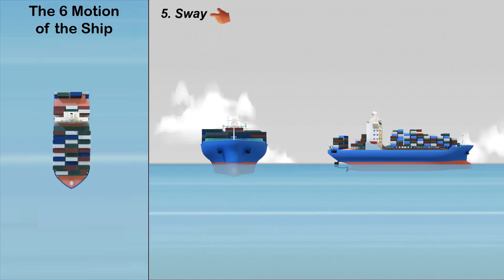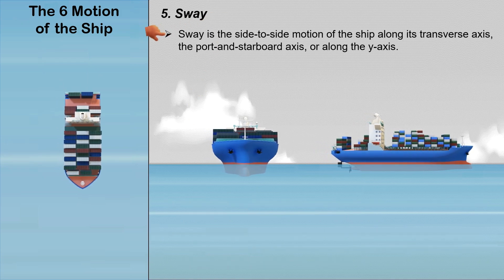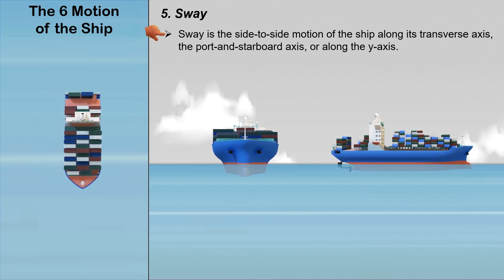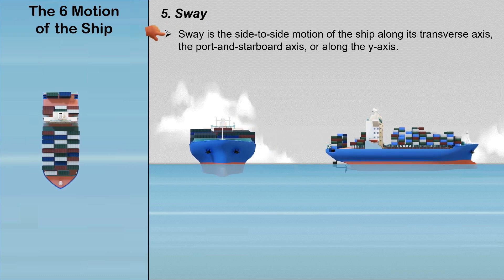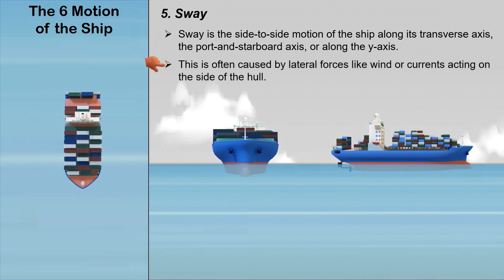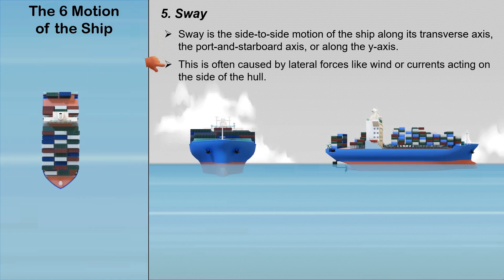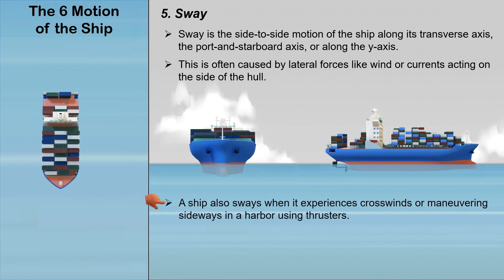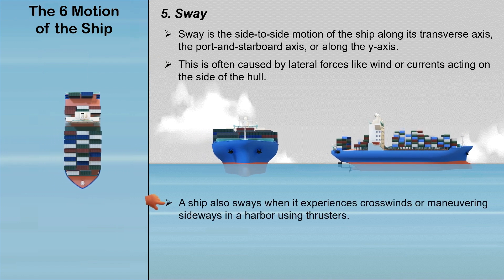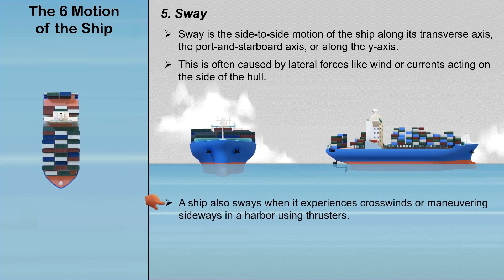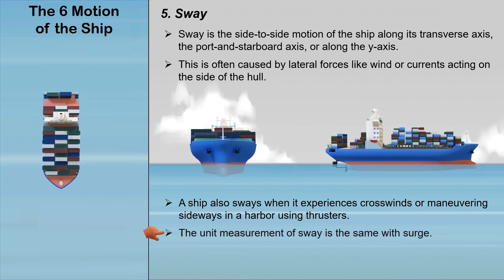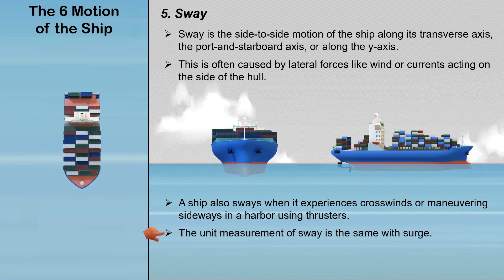Sway is the side-to-side motion of the ship along its transverse axis, the port and starboard axis, or along the y-axis. This is often caused by lateral forces like wind or currents acting on the side of the hull. A ship also sways when it experiences crosswinds or maneuvering sideways in a harbor using thrusters. The unit of measurement of sway is the same as surge.